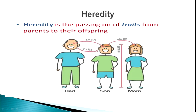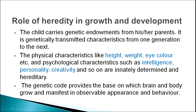That is, how we look is actually how our parents looked. How our hair is, is actually how our parents' hair was. How our complexion is, actually depends on how our parents' or ancestors' complexion was. Heredity influences growth and development because the child carries genetic endowments from his or her parents — genetically transmitted characteristics from one generation to the next which show in an individual.